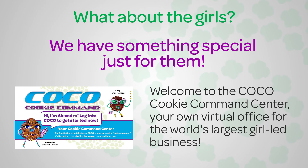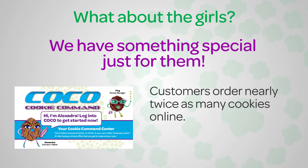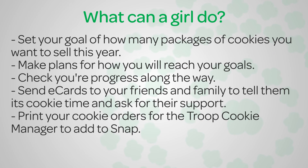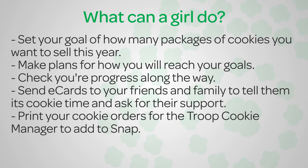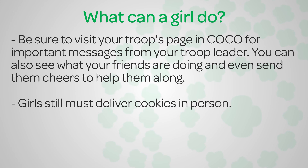So what about the girls? We have something special just for them: the Coco Cookie Command Center — the girls' virtual office in their largest girl-led business. Customers order nearly twice as many cookies online, and Coco is the faster, easier digital way for girls to reach high goals. A girl can set her goal on how many packages of cookies she wants to sell, make plans on how she'll reach her goals, check her progress along the way, send e-cards to friends and family, print her cookie orders for the troop cookie manager to add into SNAP, visit her troop's page in Coco for important messages from her troop leader, and see what her friends are doing and even send them cheers along the way.